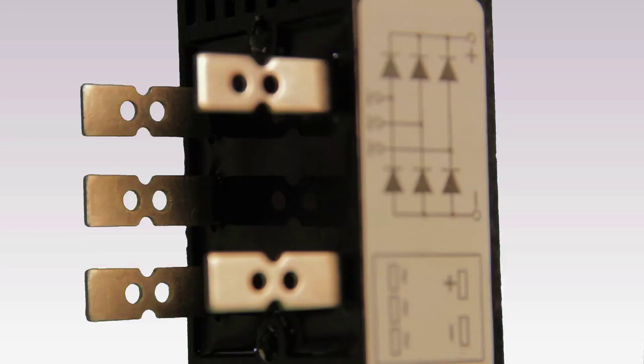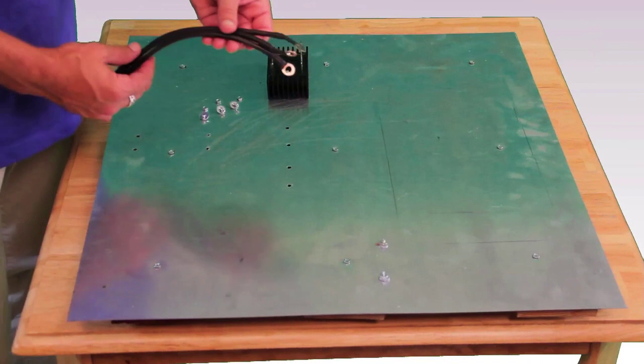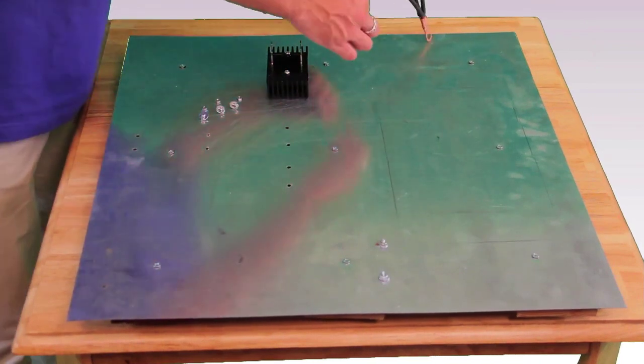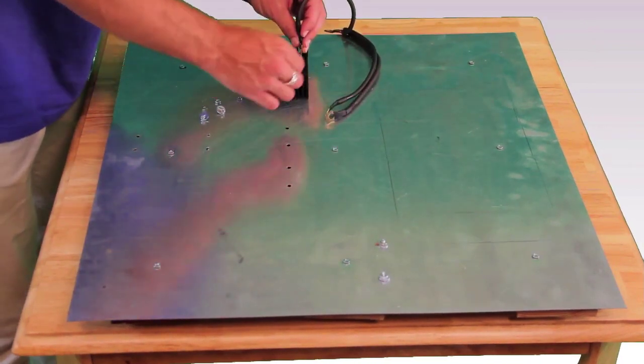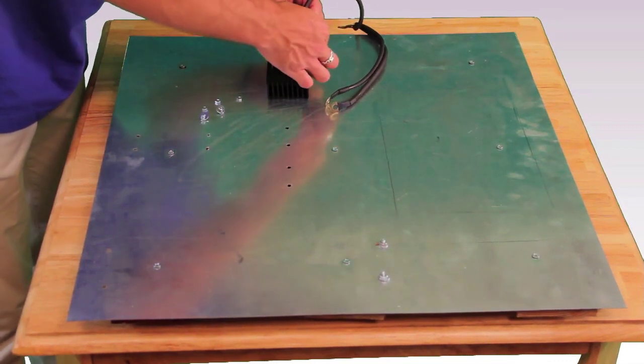The rectifier has five connection terminals, three on one side and two on the other. The three wires coming from the wind turbine connect to the three AC terminals on the rectifier. It does not matter which wire from the wind turbine goes to which AC terminal on the rectifier.